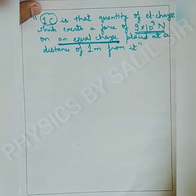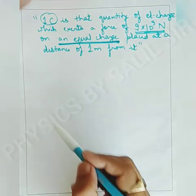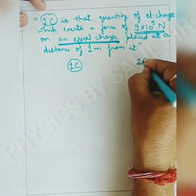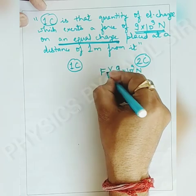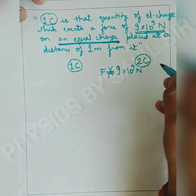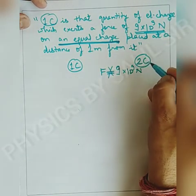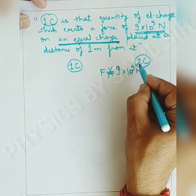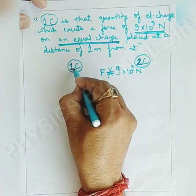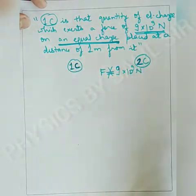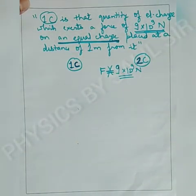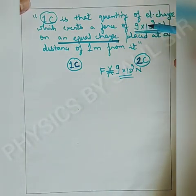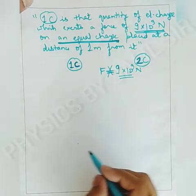This is confirmed by the formula — if the first charge is 1 coulomb and the second charge is 2 coulomb, the force will NOT be 9 × 10⁹ Newton; it will be doubled. So one coulomb is that quantity of charge which exerts a force of 9 × 10⁹ Newton on an equal charge placed at a distance of one meter from it.